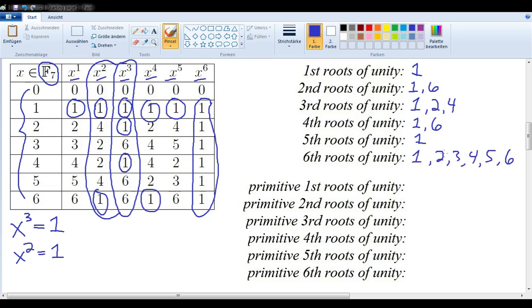So, at this point, we can already see some patterns emerging. For 1, we see that 1 will always be a root of unity, since 1 to any power will always be 1. That shouldn't surprise us.